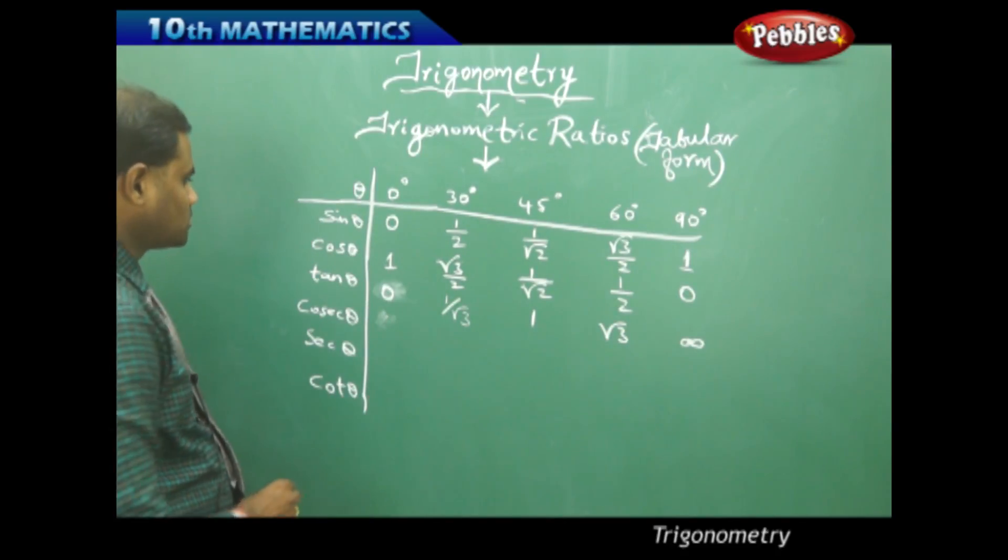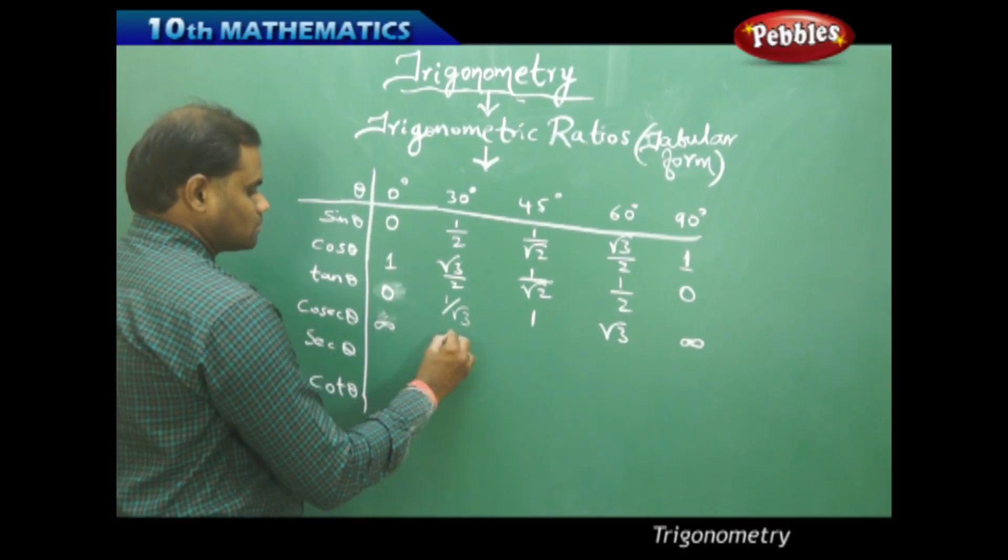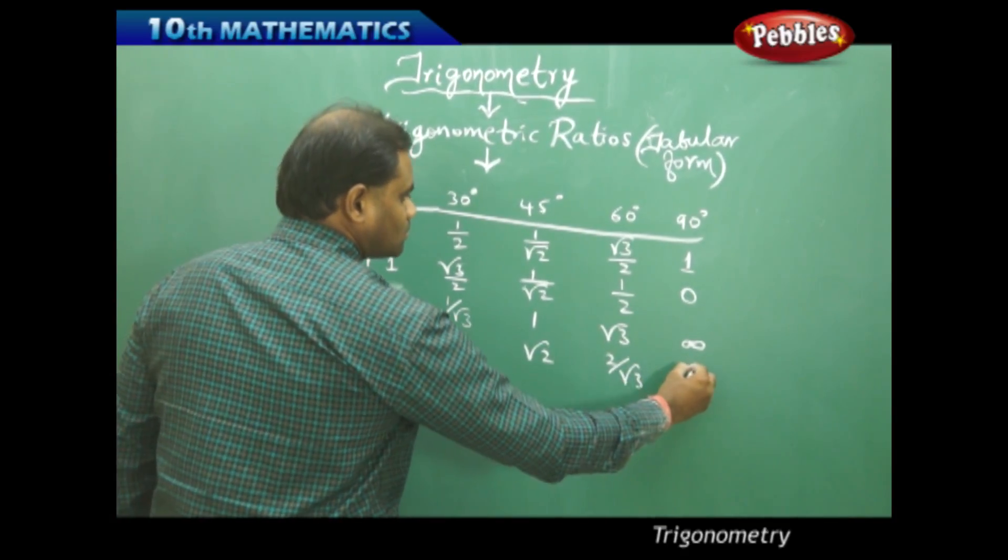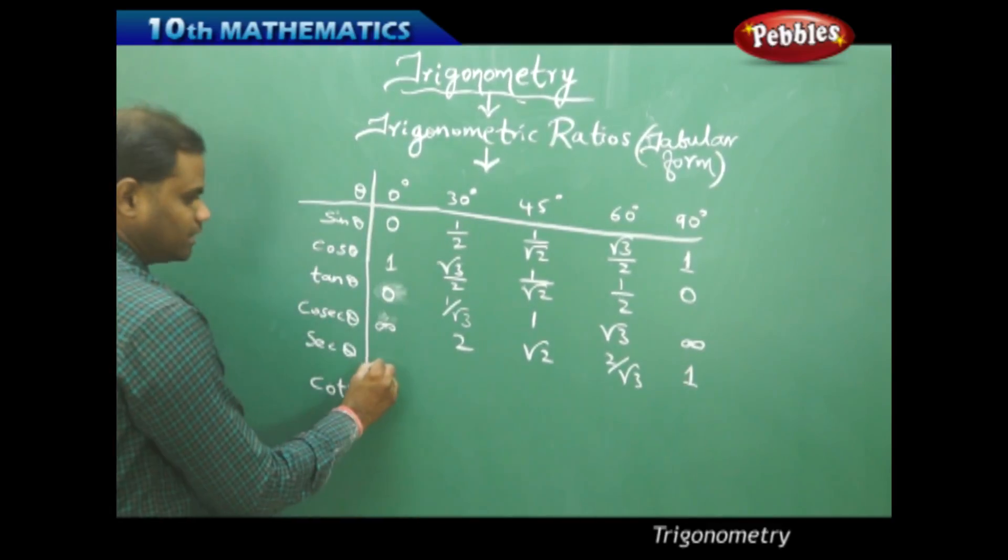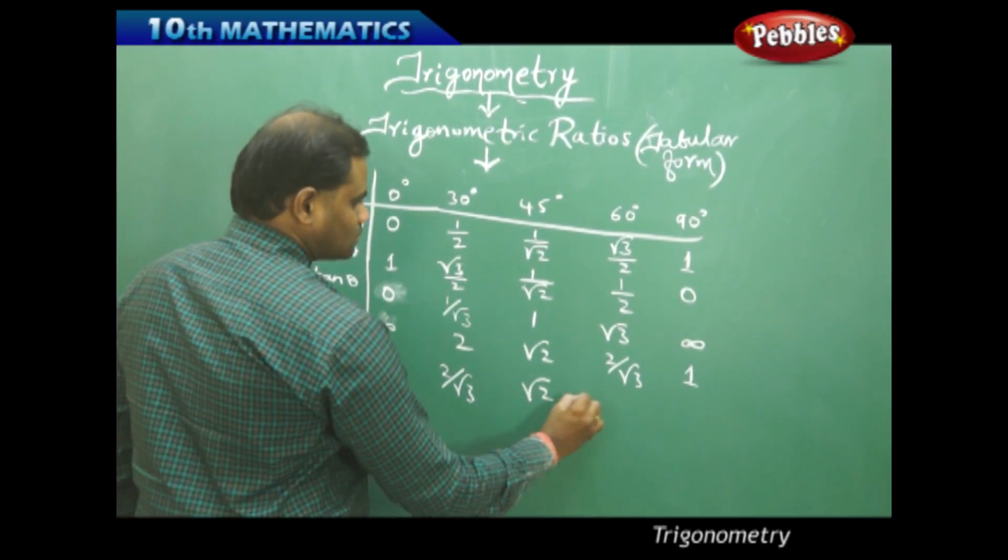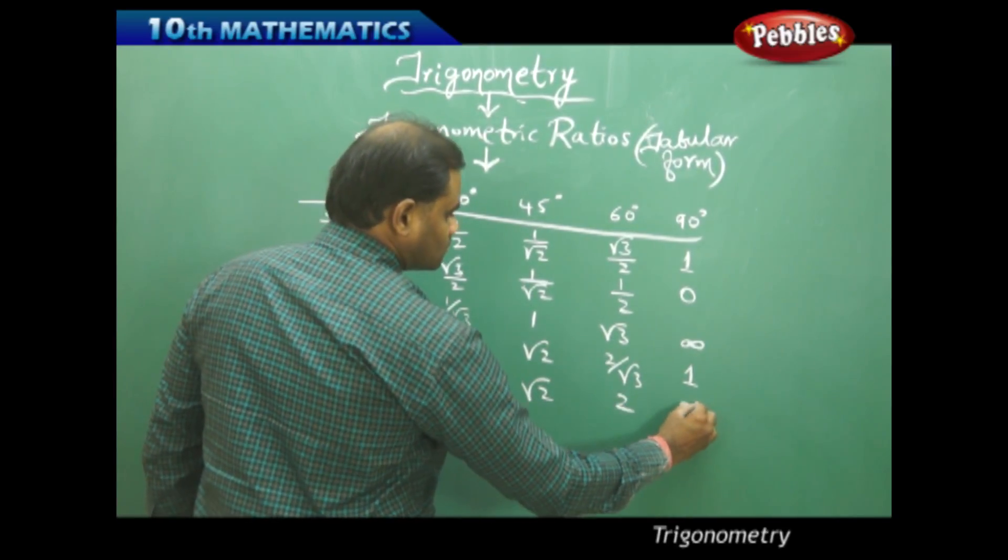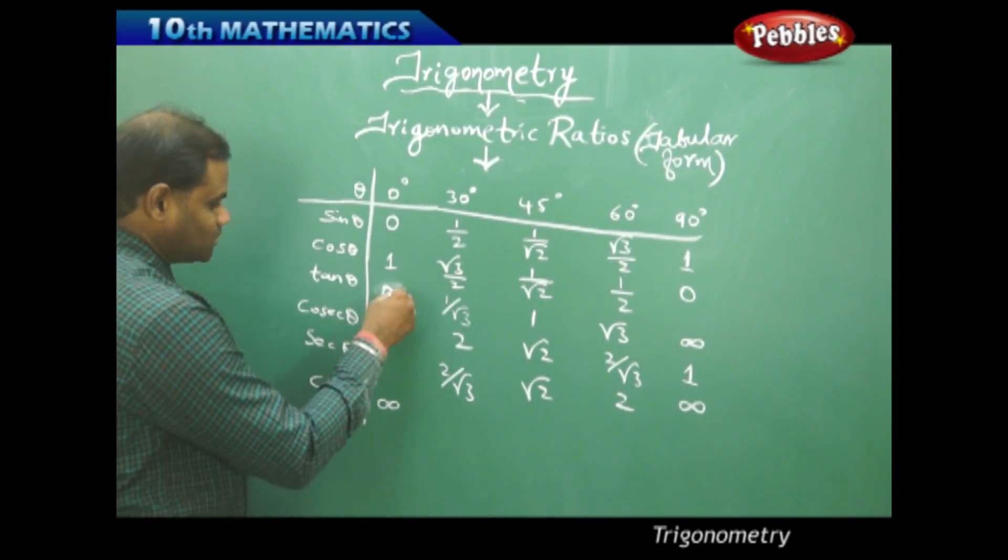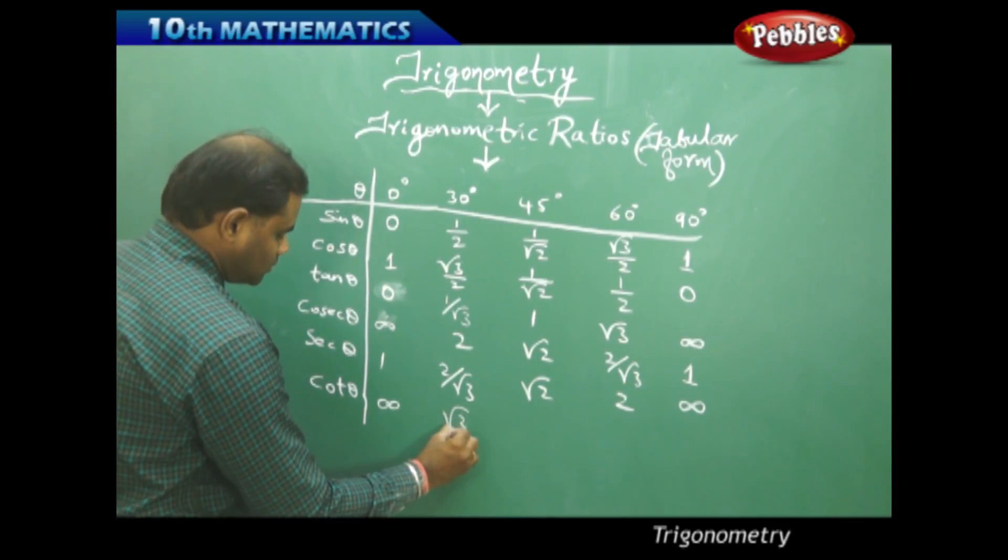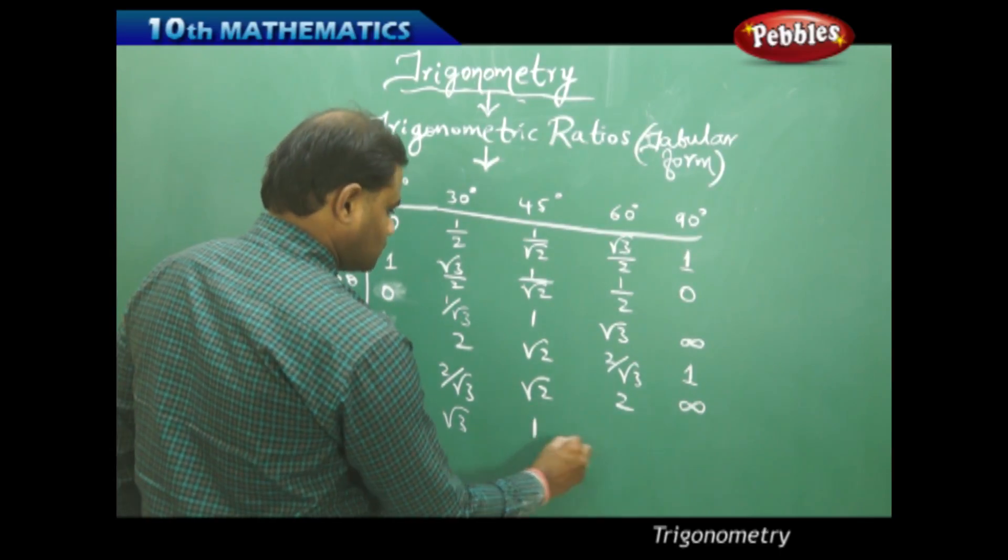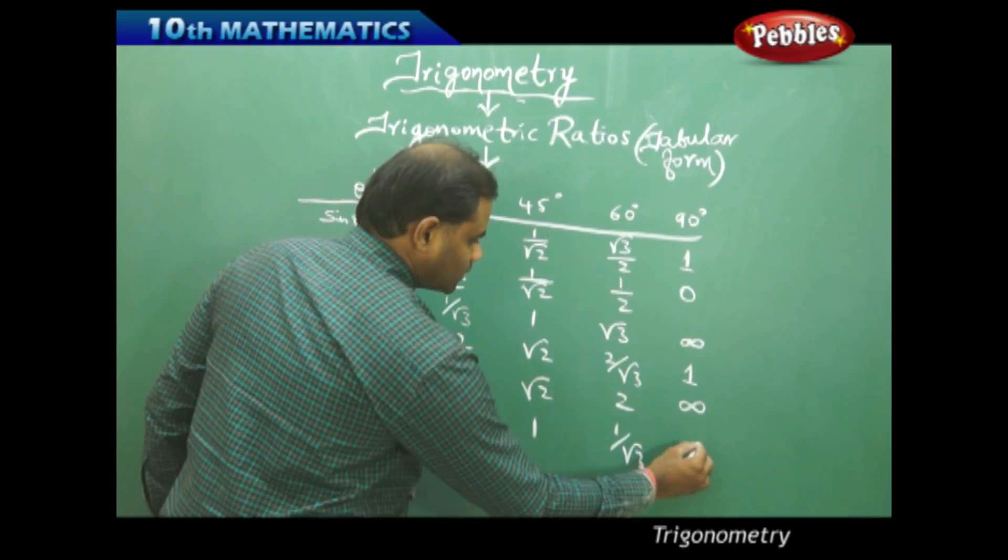And this coming to cosecant and then finally secant. Therefore to start with cot, I got cot 30 as root 3 and then it's 1, 1 over root 3 and 0.